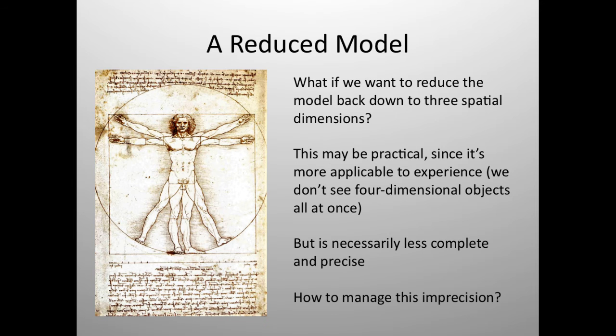Still, as much as I like that model, I don't see in 4D. No one sees in 4D. We only see the three spatial dimensions at any one time. So if we wanted to reduce this model to something of what we more actually experience, we're going to lose some of that specificity. So this may be more practical because it's applicable to the world as we see it. But it's necessarily going to be less complete and precise. So how do we manage that imprecision in the reduced model?